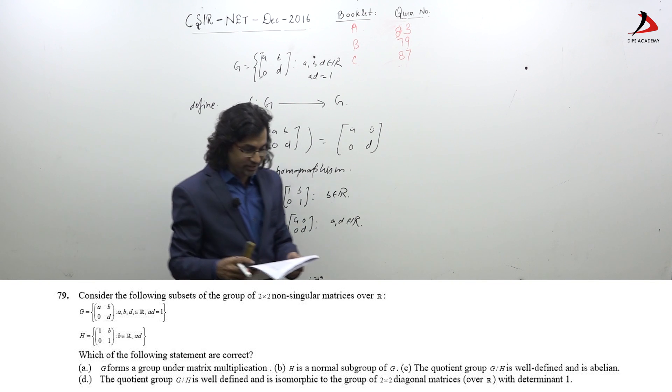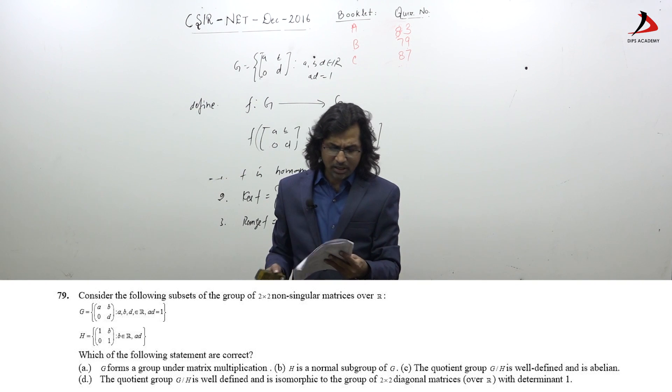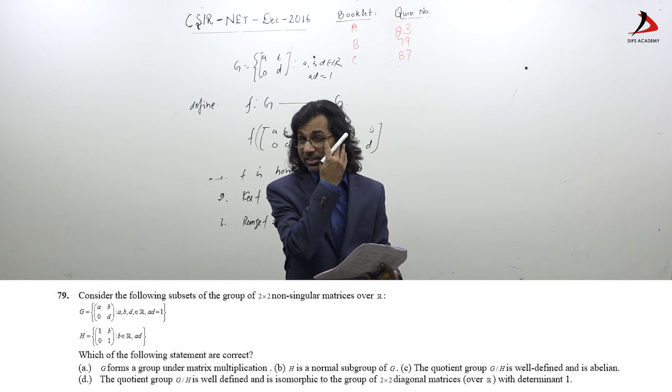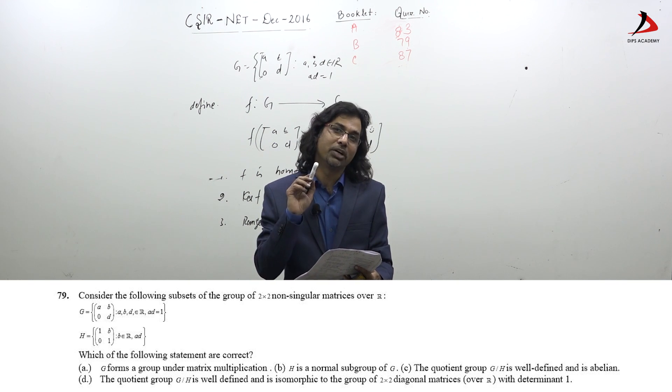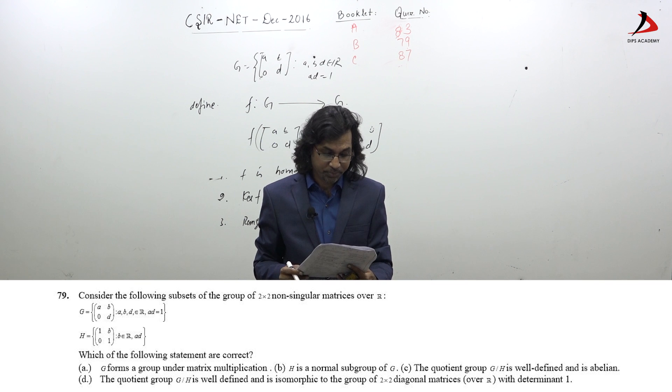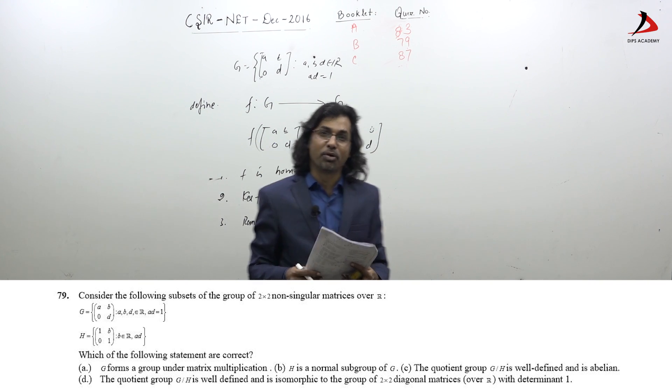Now let's go to the options. First option: G forms a group under matrix multiplication. I think you can easily verify. You can take one-step test, considering this G is a subset of GL(2,R). So use one-step test over G. You can verify this is a subgroup and hence a group itself.